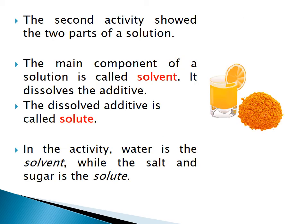In the second activity, where two glasses were prepared with different amounts of powdered juice, it showed the two parts of a solution. The main component is the solvent — it is the one that does the dissolving. The dissolved substance is called the solute. In the activity, water is the solvent while salt and sugar are the solutes; in the second activity, the powdered juice is the solute.